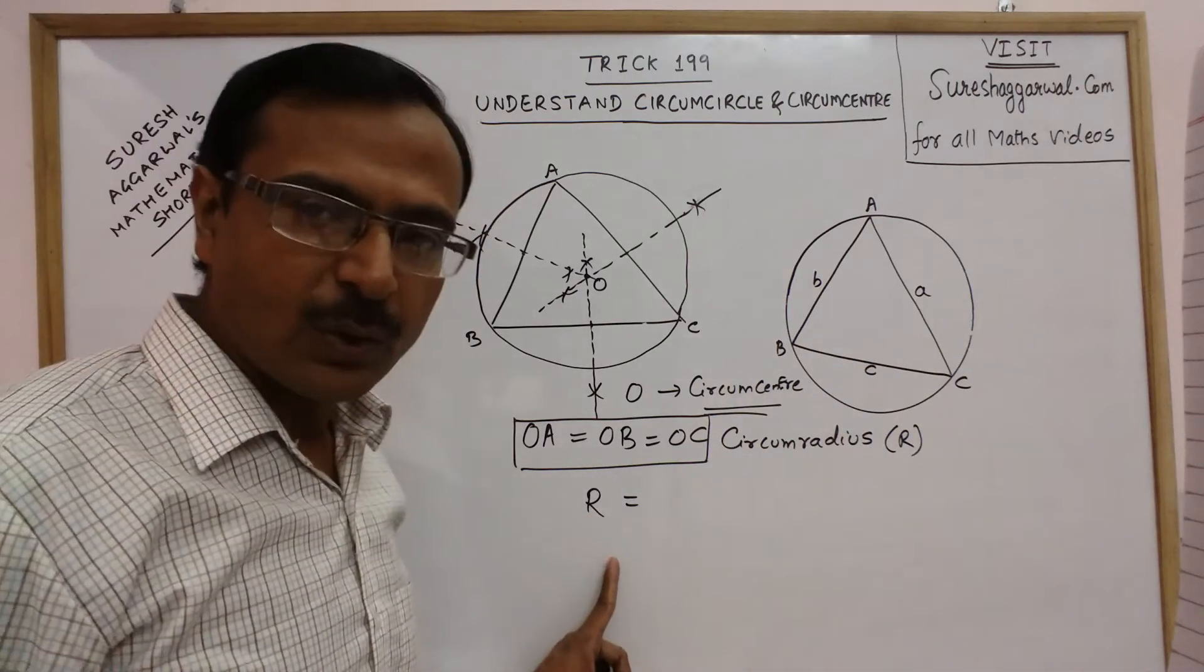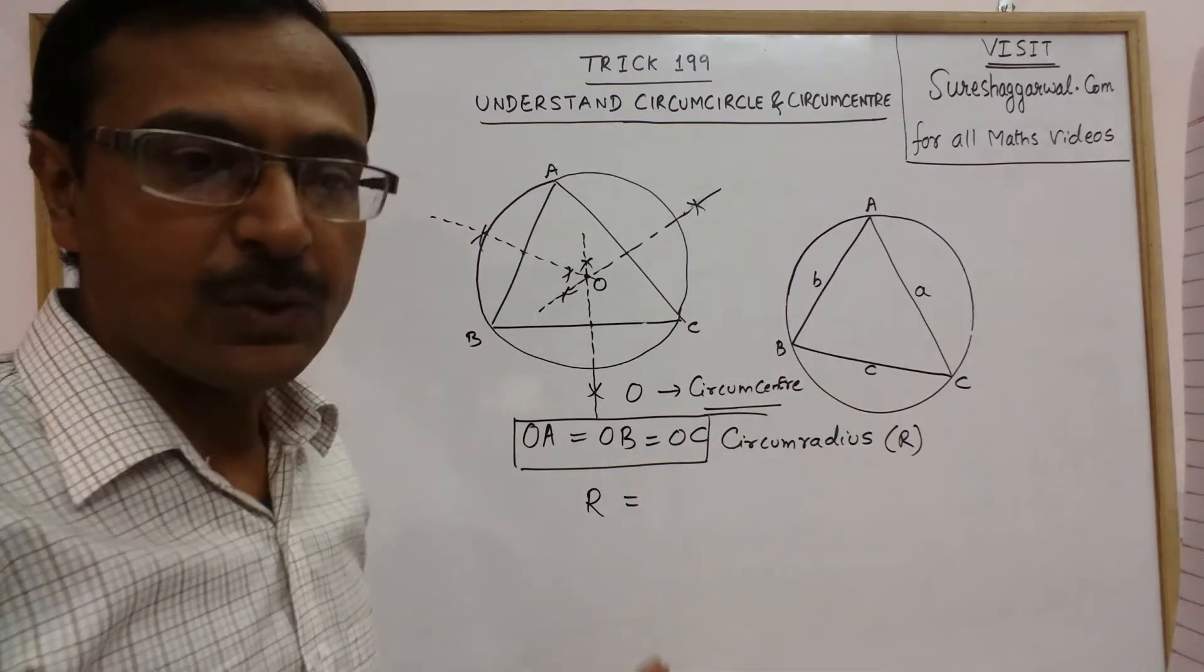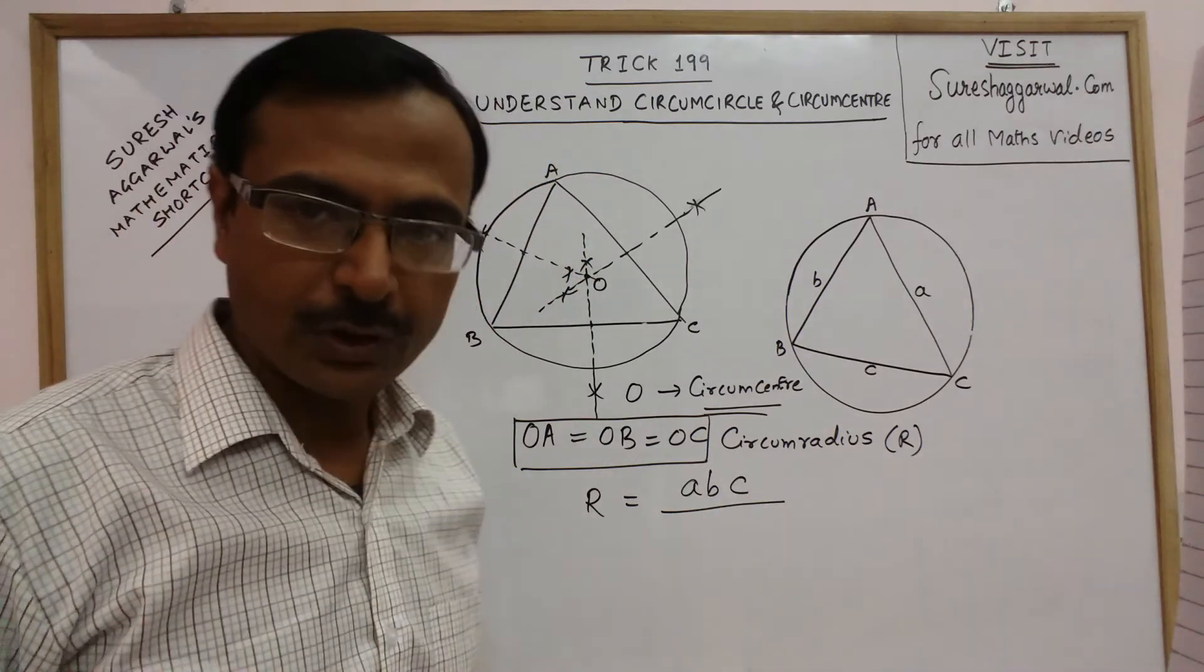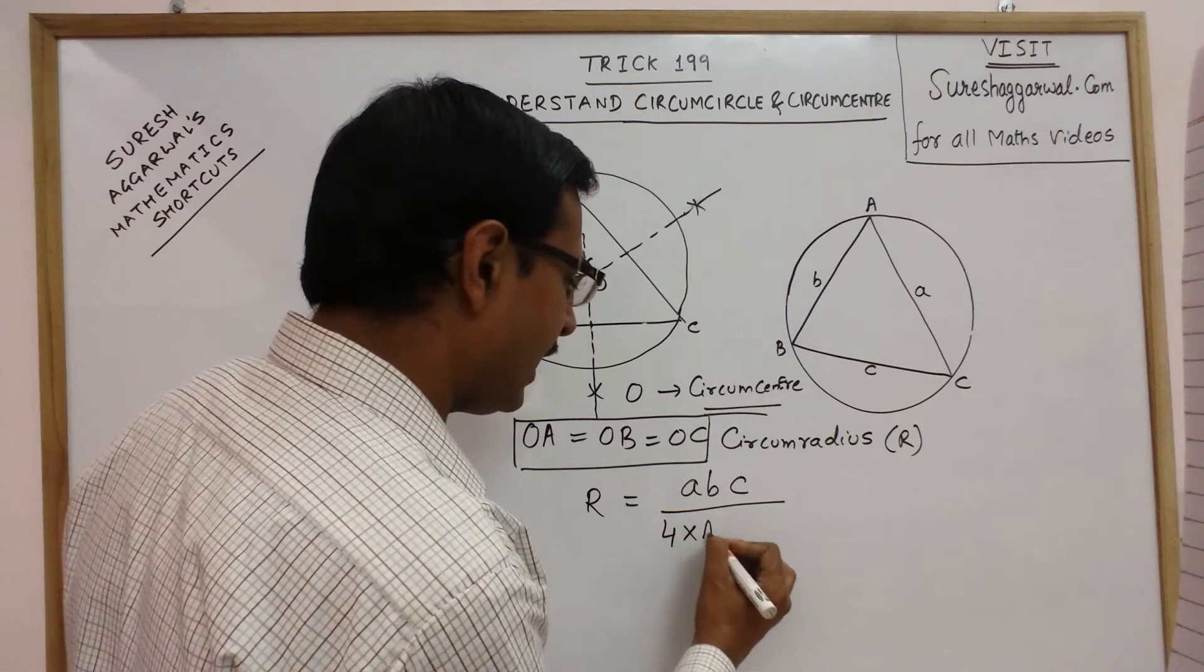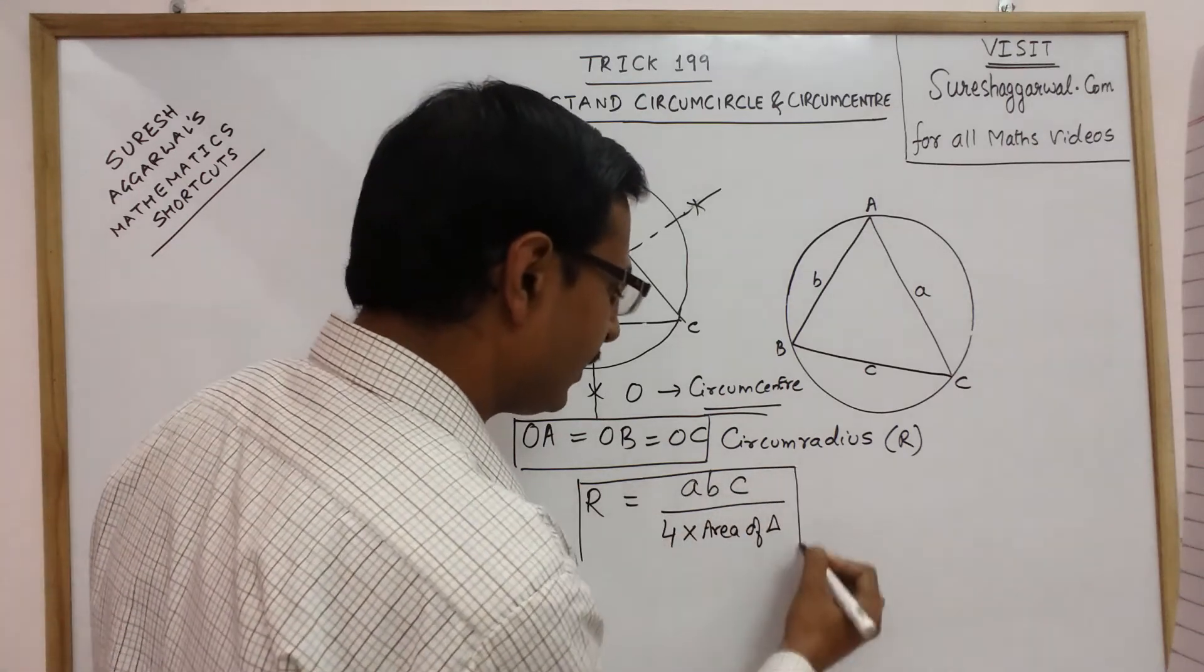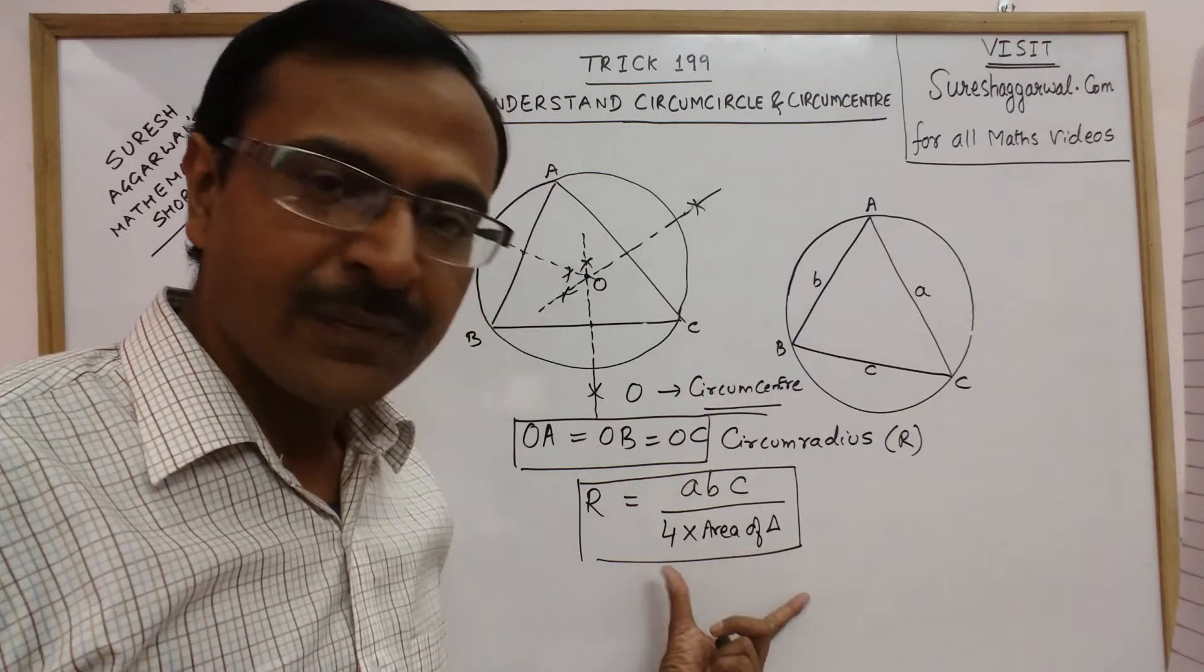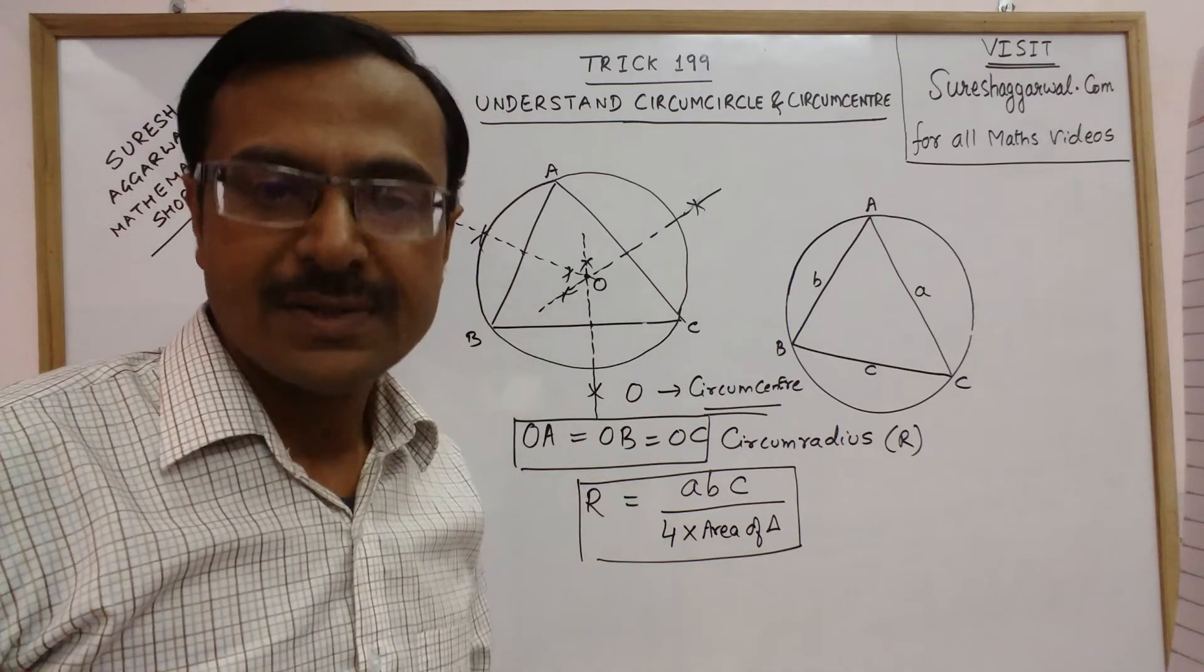You can find out the circumradius of this circumcircle by using the relation, the product of sides, that is a, b, c, the product of the three sides, divided by four times the area of triangle. If you can find the area of the triangle, then you can easily put area of triangle and the value of the three sides in this formula to get the value of the radius of circumcircle.